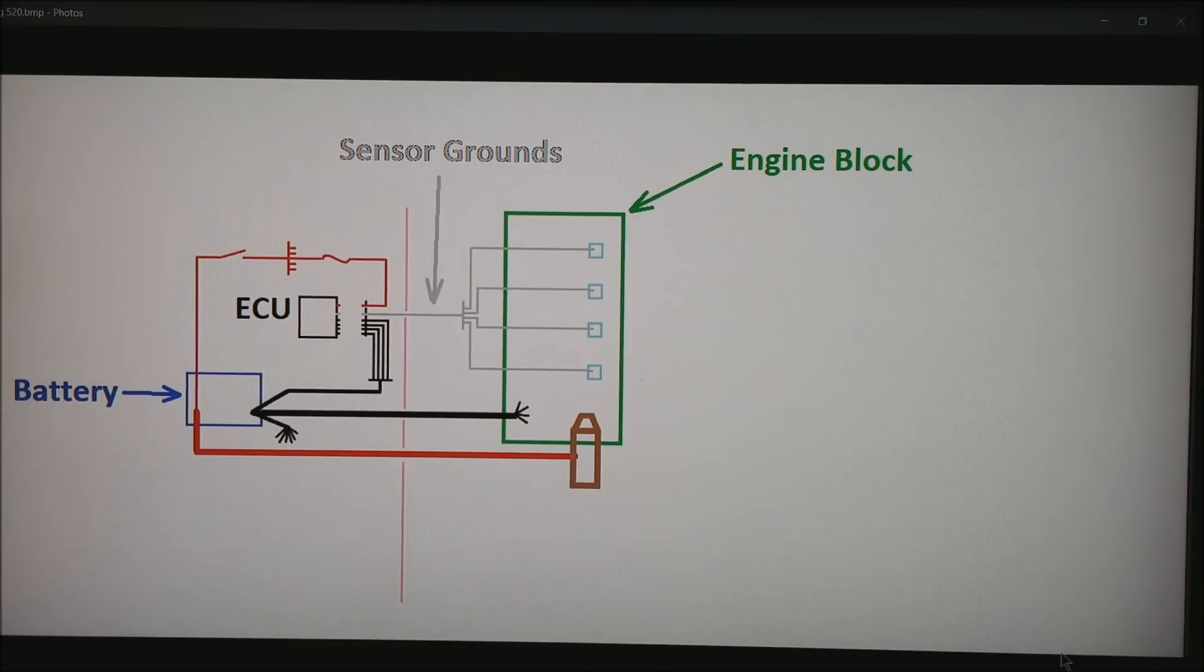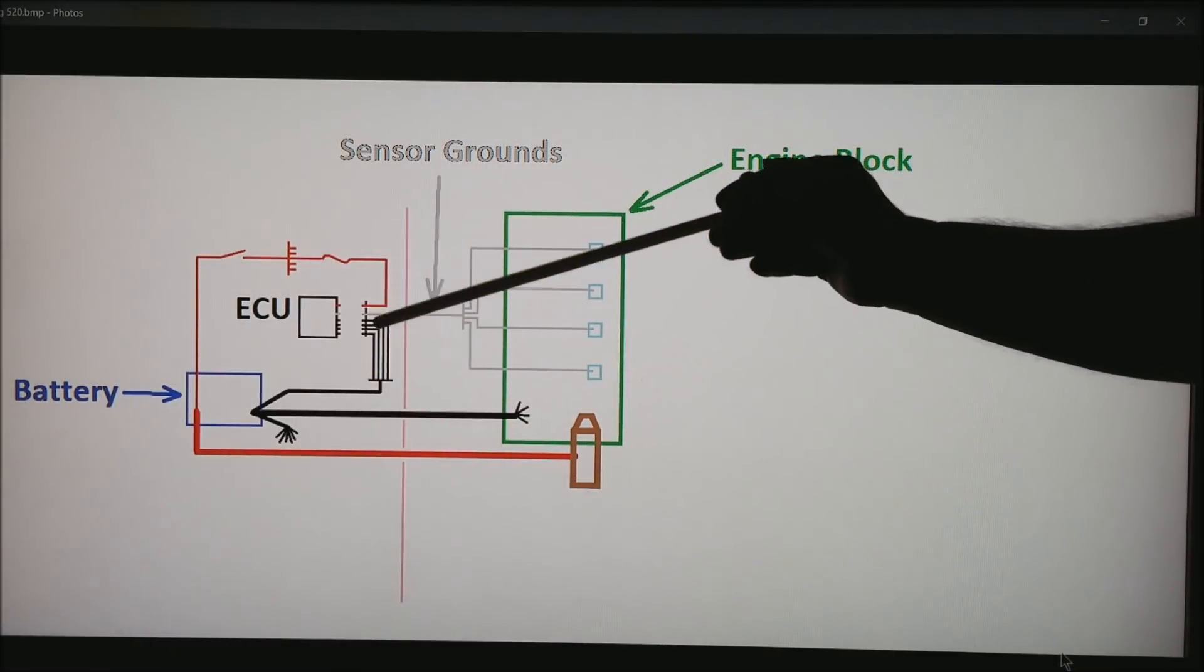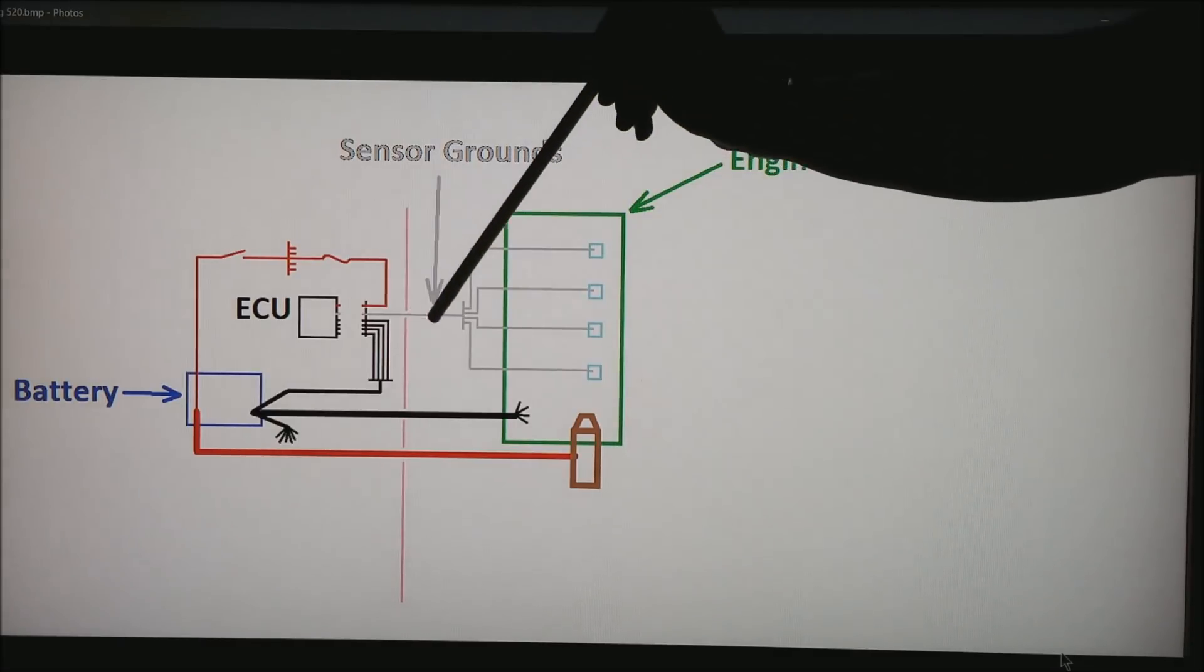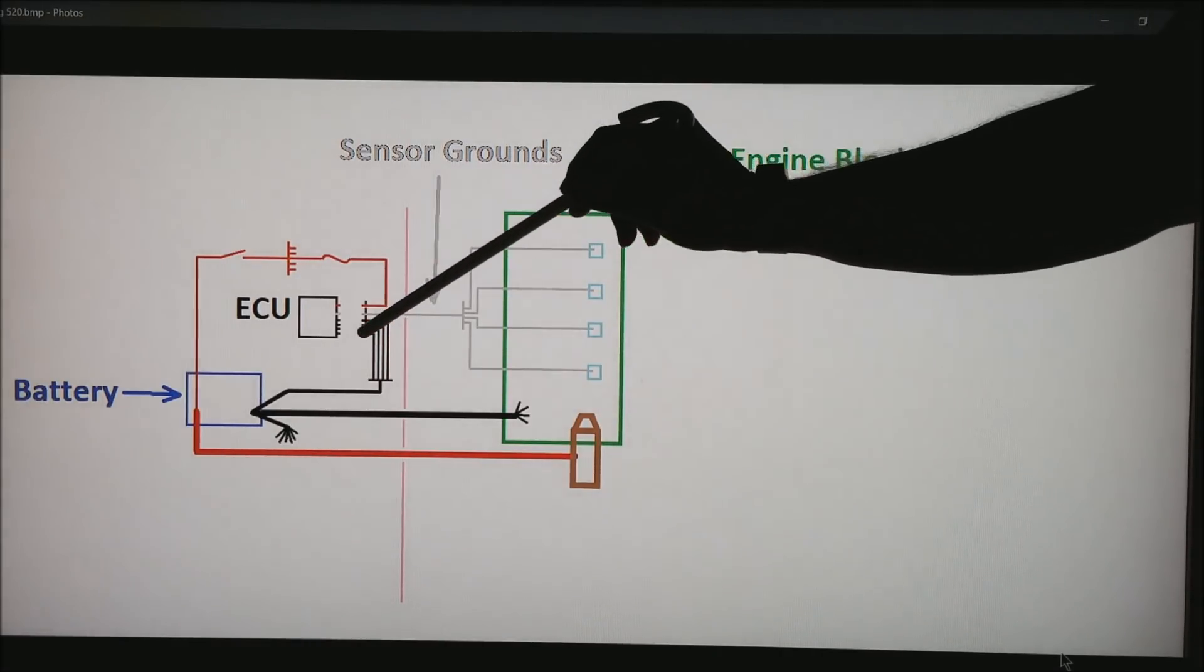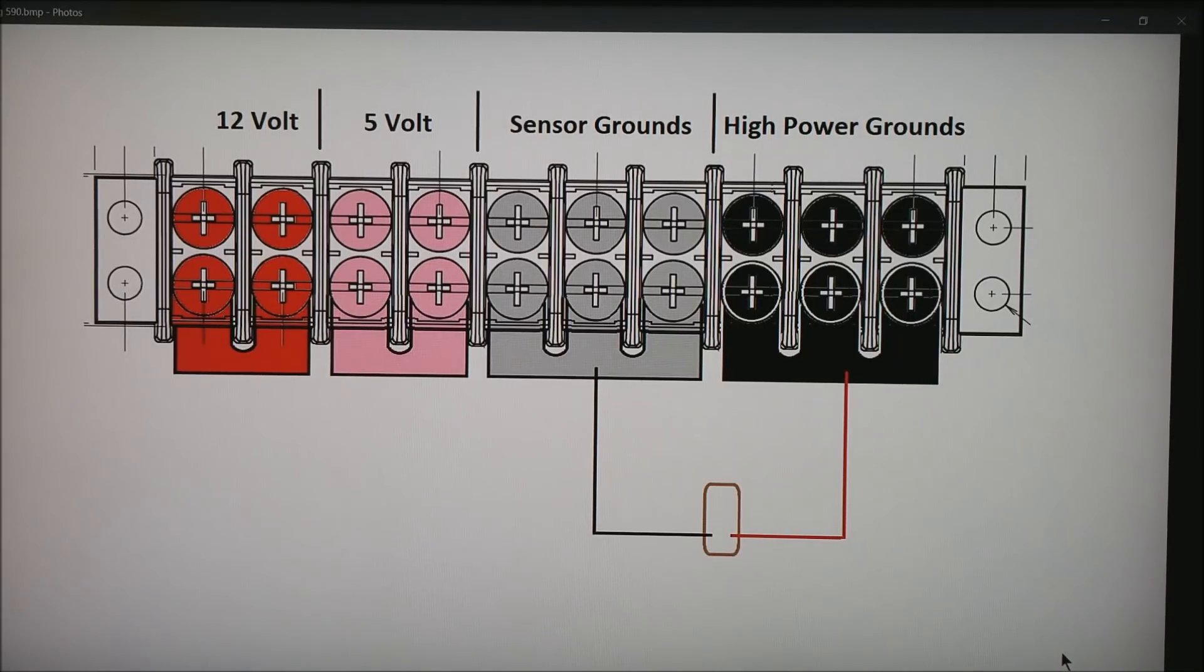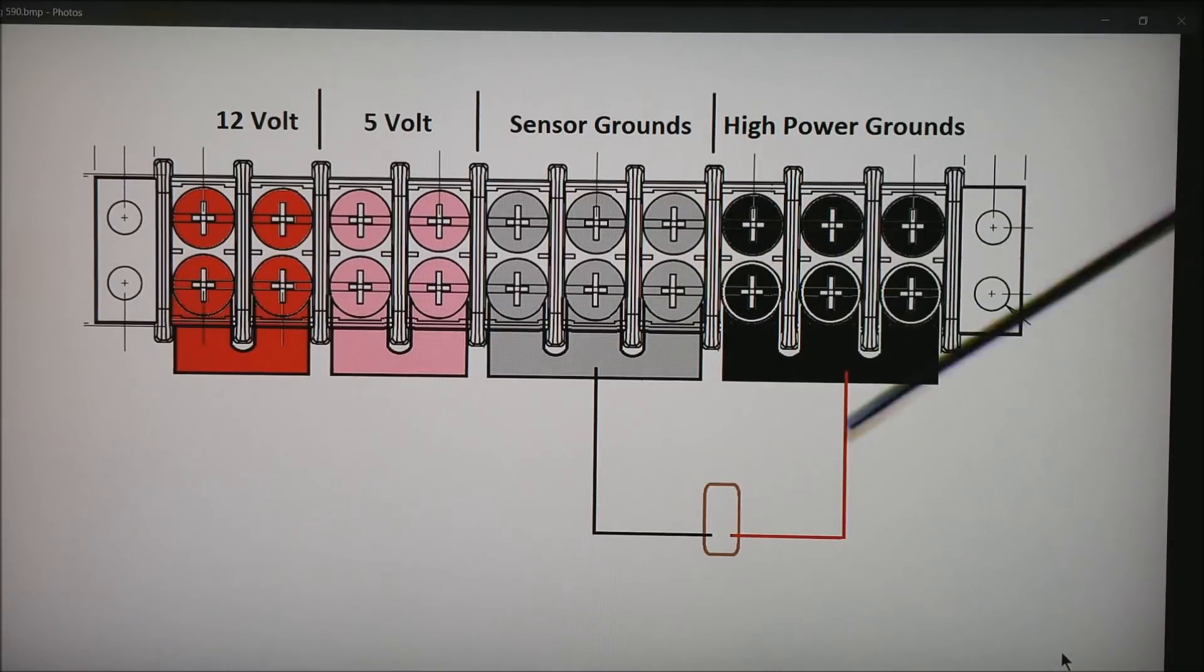So one little test we always like to do is disconnect the ECU entirely from the wiring harness and then you can check between the sensor ground and the system ground and make sure with a voltmeter there's no continuity. You can also do this at the barrier blocks or the terminal blocks where you can use your voltmeter between sensor ground and high power ground and make sure that there is no continuity through there whatsoever. If there is you have wiring issues.